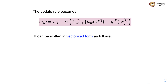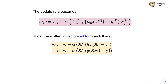We can write this in a vectorized form: the new value of the weight vector w is set to the old value minus alpha times the transpose of the feature matrix into the difference between the predicted label and the actual label. We can substitute h_w(x) by g(Xw), where g is the logistic function and Xw is the linear combination of features for all examples. This is the compact vectorized form of the update rule, which we will be implementing when we implement logistic regression from scratch.